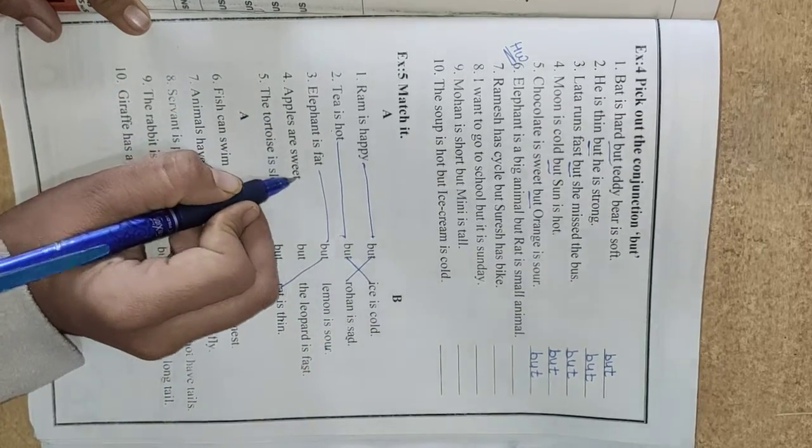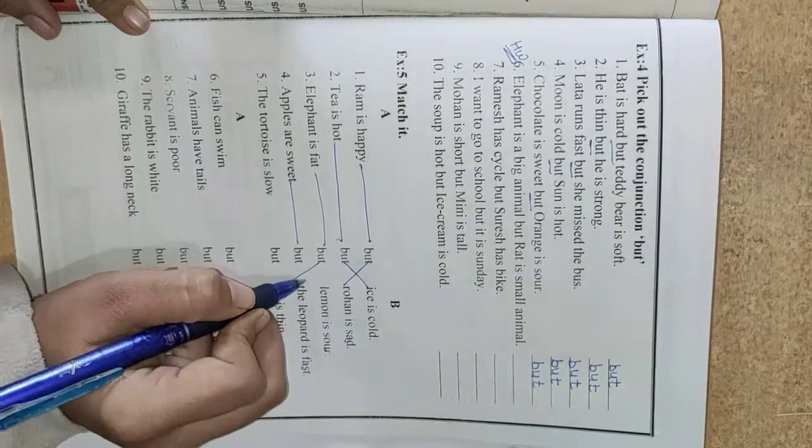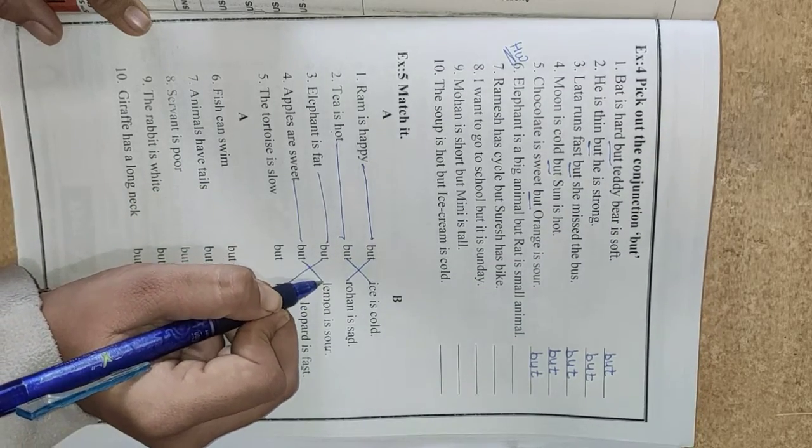Number 4. Apples are sweet but lemons are sour. Yes. Sweet opposite sour.